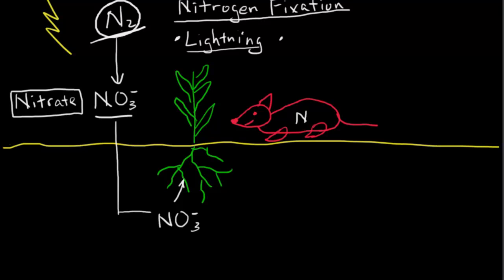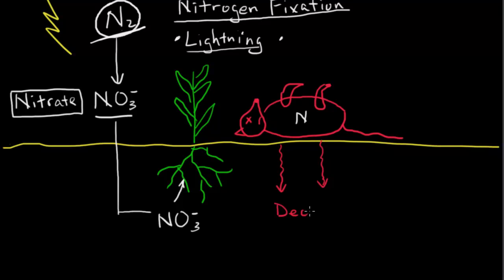Unfortunately, the life of the mouse is going to be short in our explanation, and the poor mouse dies. So when that poor mouse dies, the compounds inside that mouse will decay through decomposers, through the process of bacteria.